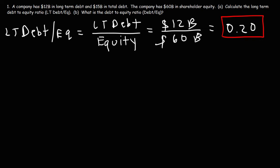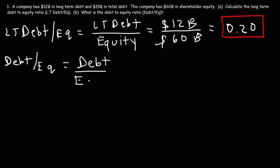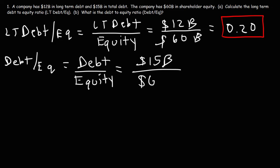Now let's move on to Part B and calculate the debt-to-equity ratio. This is going to be the total debt divided by the equity. The total debt in this company is $15 billion and the equity is $60 billion. So it's 15 divided by 60, which is 0.25.